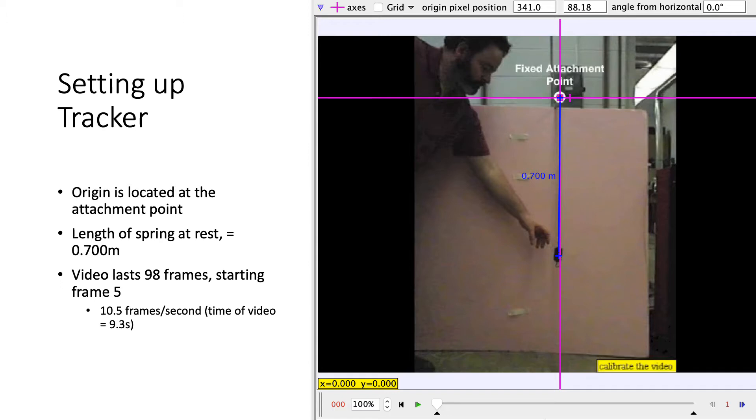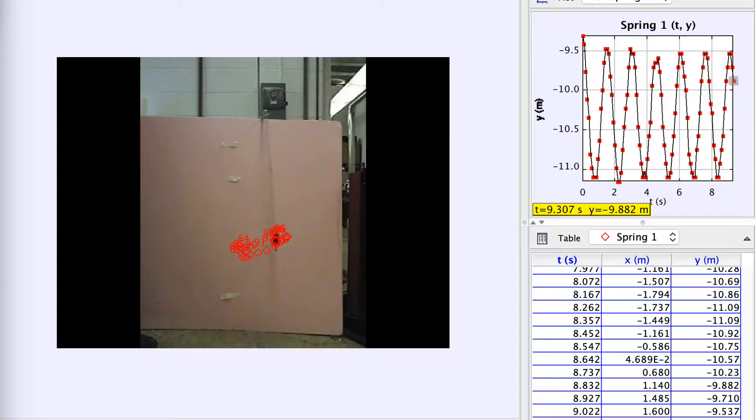The video lasts 98 frames with 10.5 frames per second, so the time of this video is 9.3 seconds. Here's a photo of what happened in Tracker. You can see with the red dots that the spring oscillated in both the x and y directions.